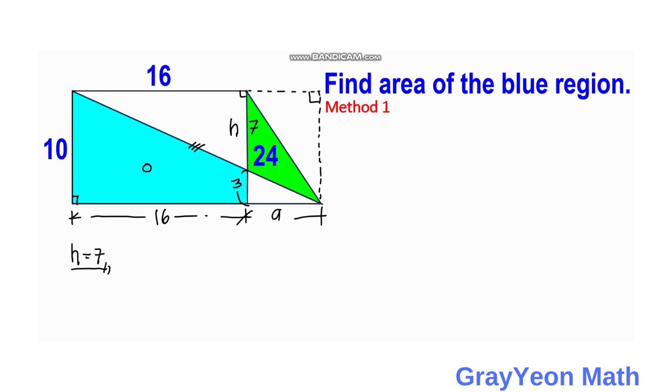So we have area of the trapezoid is equal to one half times base 1, which is 10, plus base 2, which is 3, times the height, which is 16.